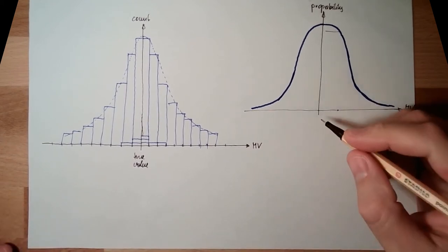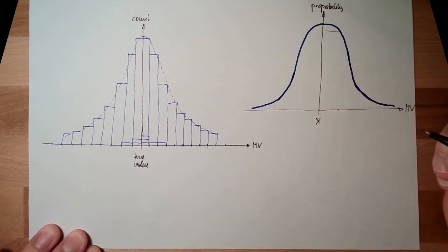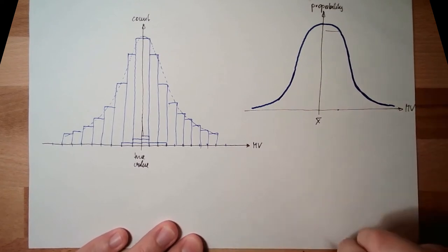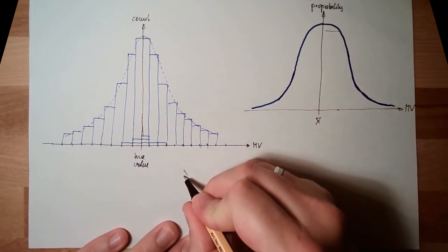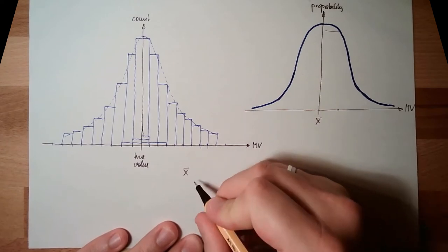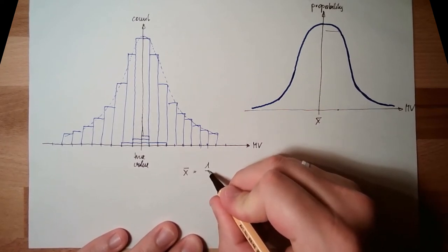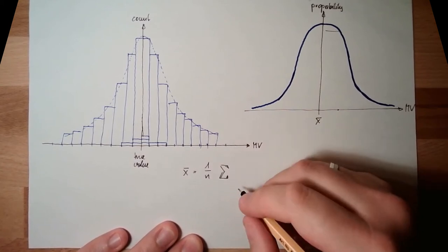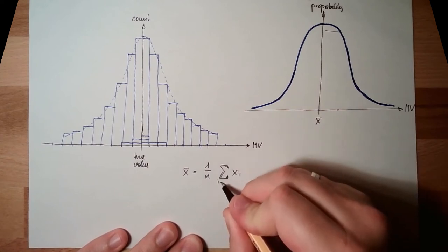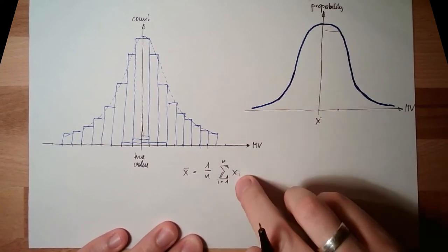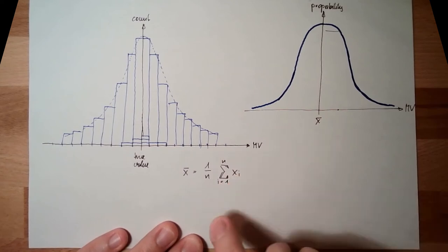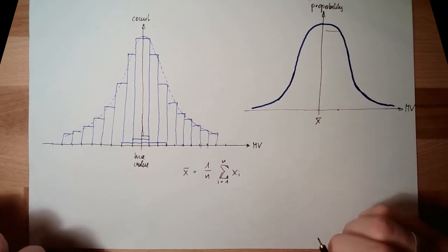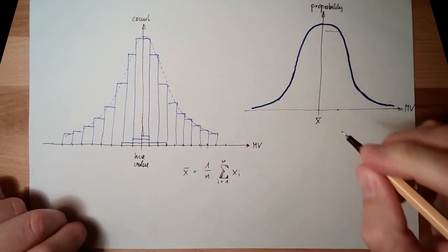And here in the middle, I do have the average, the average value of all measurements. It's this X bar. It's one divided by N, and the sum of all measurements. If I have 80 measurements, I sum up all 80 measurements, divide by 80, and I have the average. Average value is in the middle.